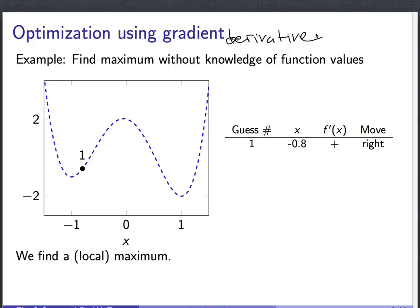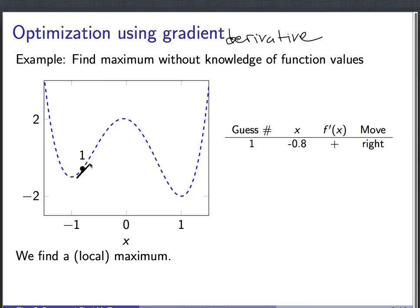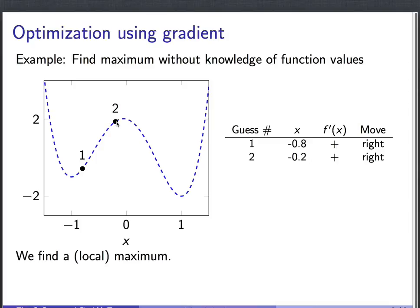We're going to start by making a guess of where the maximum is. My guess is point number one, at x equals minus 0.8. If we know the value of the derivative there — the tangent line has a positive slope — that means the function is increasing at this point. So to find the maximum, we should move a little bit in the direction the function increases, meaning move to the right. My second guess is at x equals minus 0.2, and you can ask about the derivative. It's positive, meaning the function is increasing, so to reach higher ground, you should again move to the right.